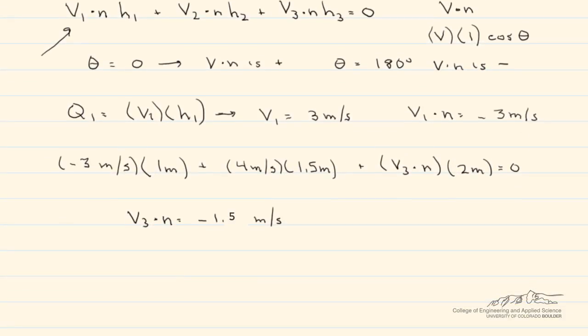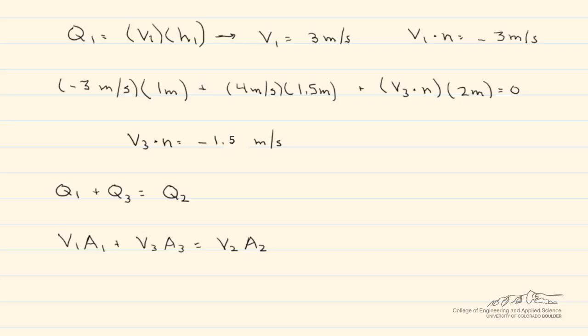Let's check this by using the flow rates. We know Q1 is going in and Q3 is going in, and that has to equal Q2, which is the only flow rate that comes out. We can write this as V1 A1 plus V3 A3 equals V2 A2. When writing it like this, we use the magnitudes of these flow rates.